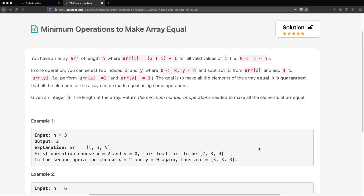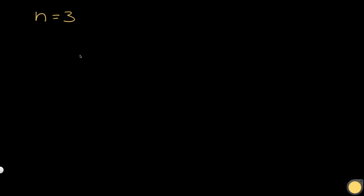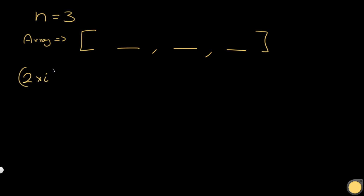Let's take a look at the first example where n is equal to 3. We're only going to be given n, which is the length. So let's form our array from scratch — it's going to have a length of 3. Using the formula 2*i + 1: at index 0 it's 2*0 + 1 = 1, at index 1 it's 2*1 + 1 = 3, and at index 2 it's 2*2 + 1 = 5. So our array looks like [1, 3, 5] when n equals 3.